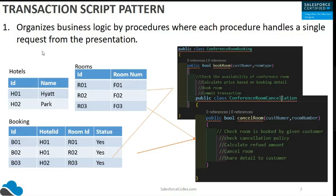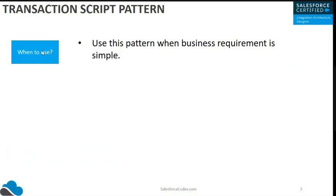After all those steps, it will cancel the room and share the details with the customer. All of this logic is written in a single procedure. We don't need multiple procedures or OOP concepts like dividing into multiple classes with polymorphism. For each kind of request — book or cancel — we have a separate method.